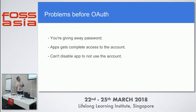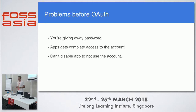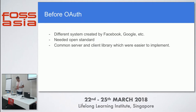The problems before OAuth2 were: apps were getting complete access to your account with your password, you couldn't disable an app's access to your account at any point, and you couldn't control what an app could do — for example, in Facebook, an app could access your friend list and post on your behalf, but you couldn't change those permissions before 2008.